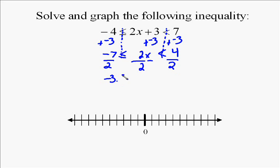Now, we go through and simplify. Negative seven divided by two is 3.5, so negative 3.5. Two divided by two is one, so it's x, and then four divided by two is two.